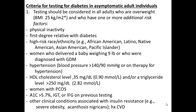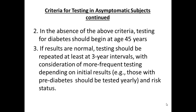There are also tests called islet autoantibodies that can identify individuals at risk for developing type 1 diabetes. In the absence of all the criteria mentioned, testing for diabetes should still begin at age 45. If results are normal, testing should be repeated at least every three years, with more frequent testing depending on initial results.